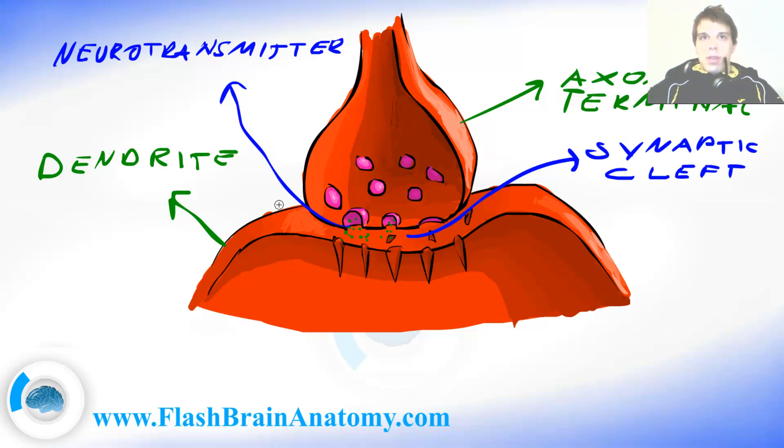On a dendrite, there are special receptors that receive these molecules and that way the signal is being transported onto the dendrite and it goes further.